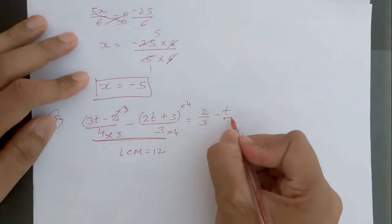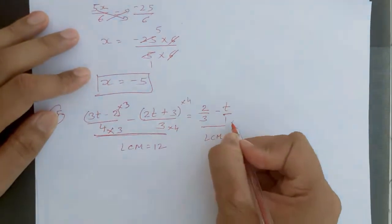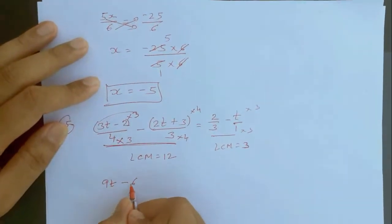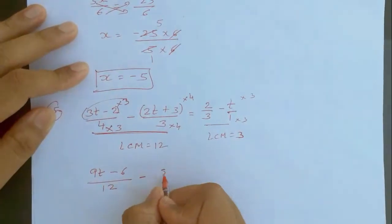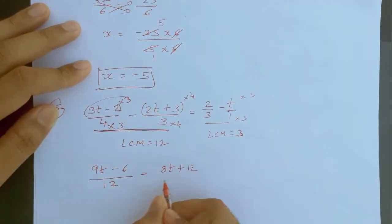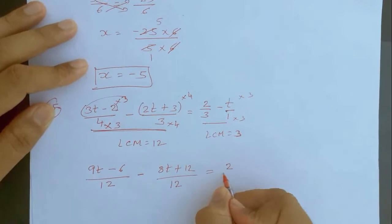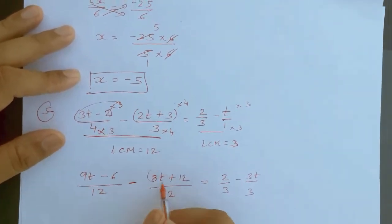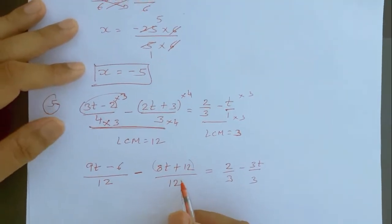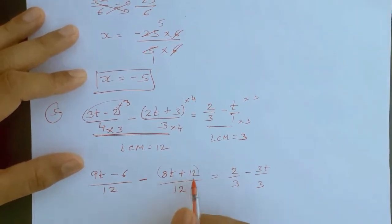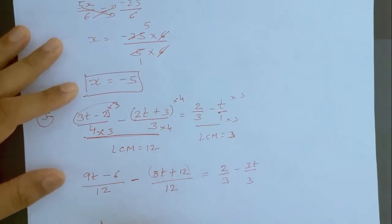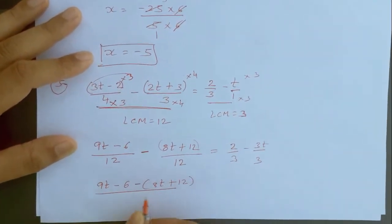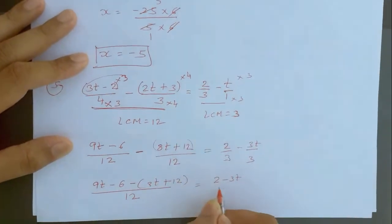And here below this t write down 1. The LCM will be 3, so multiply this 1 by 3. Now 3 into 3 will be 9. So 3 times 2 is 6 upon 12 minus 4 times 2 is 8t, and 4 times 3 is 12 upon 12, equal to 2 by 3 minus 3t by 3. Now remember: whenever there is a minus sign in front of any two variables written in bracket form, you must change the sign of the bracket numbers. Whatever numbers are present in the bracket, you have to change their sign after opening the bracket. So 9 minus 6 minus 8t plus 12 upon 12 is equal to 2 minus 3t upon 3.